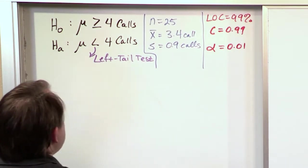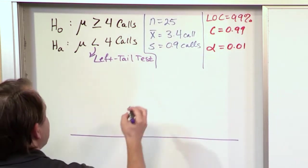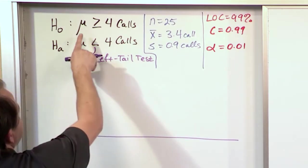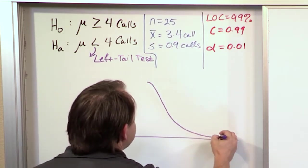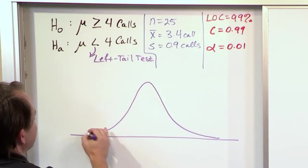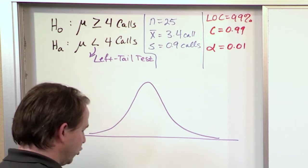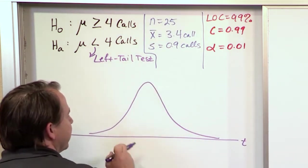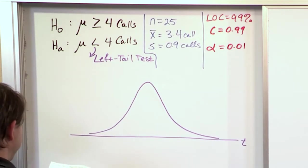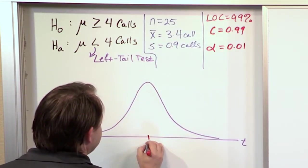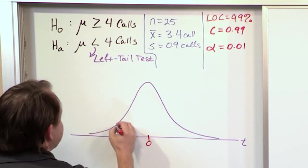The next step is to draw a picture. We're using a T-distribution because we're dealing with the mean of something and the sample size is less than 30. So we draw a bell-shaped distribution — it's not normal but looks normal at a glance. The higher the sample size, the closer the T-distribution looks to normal. We put a T to remind ourselves it's a T-distribution.